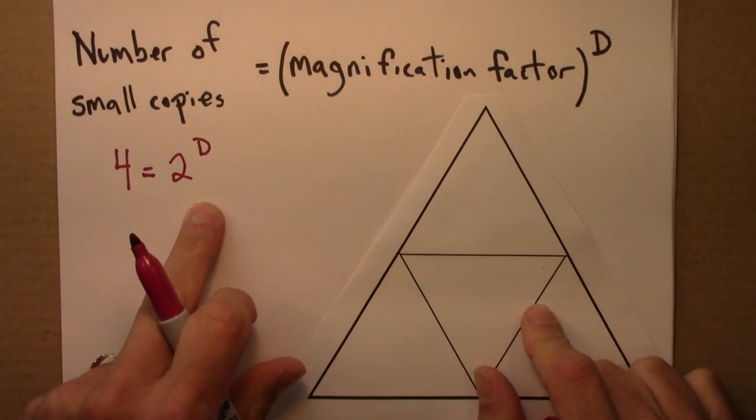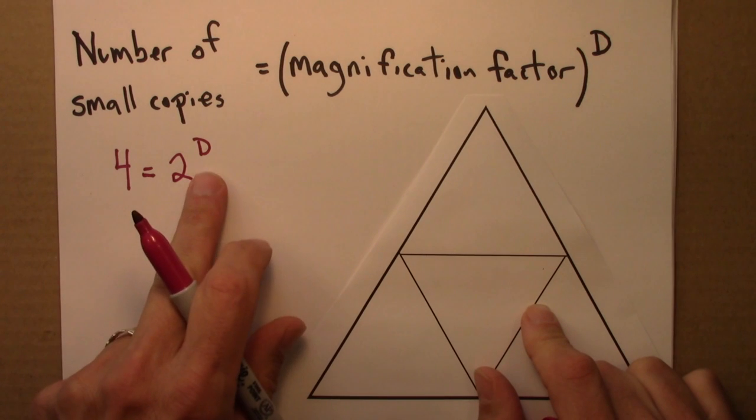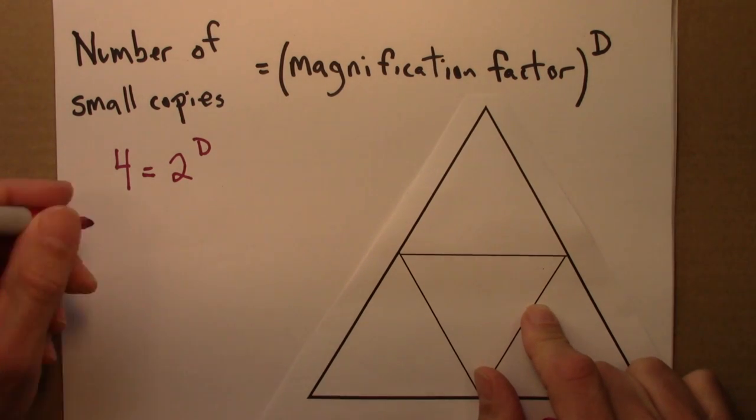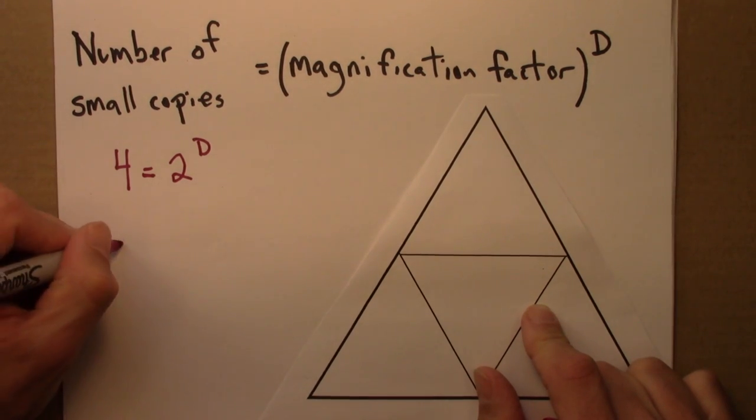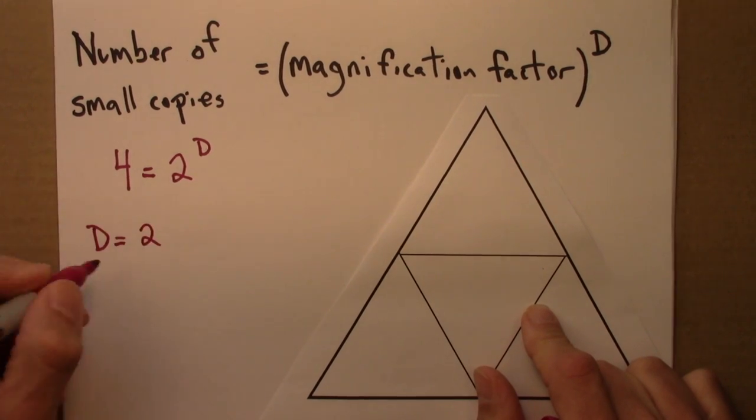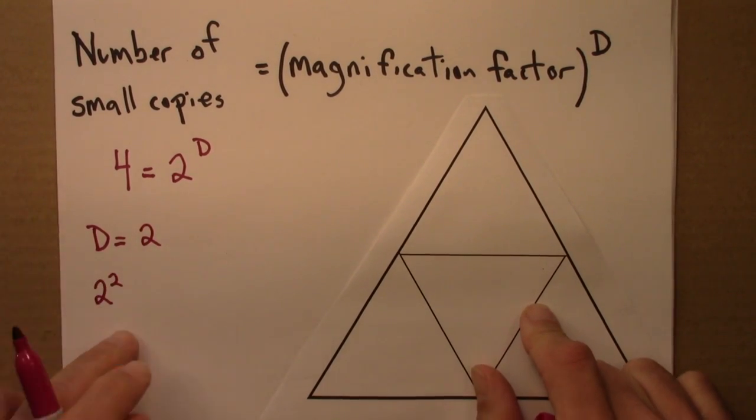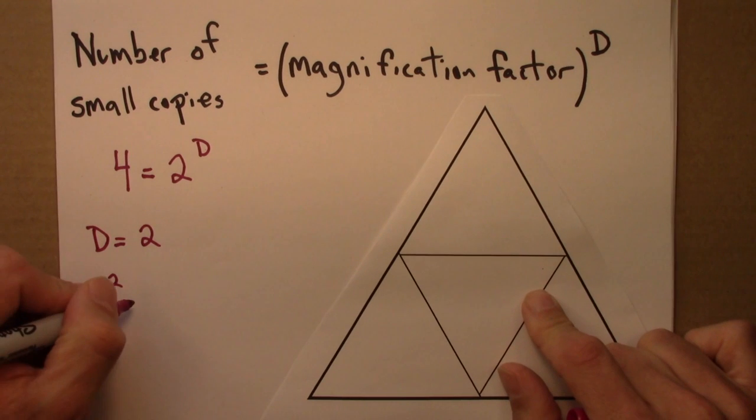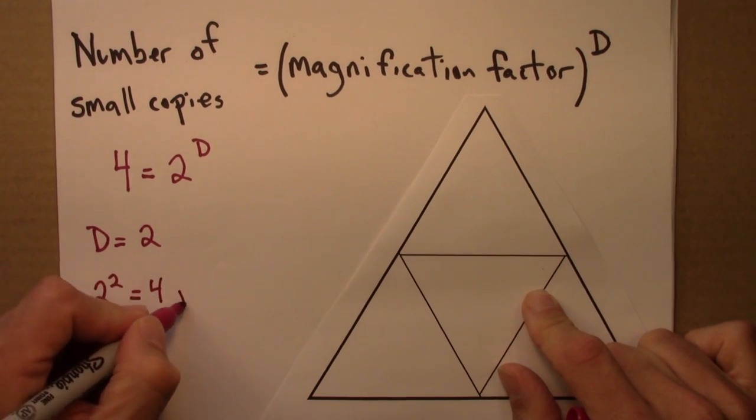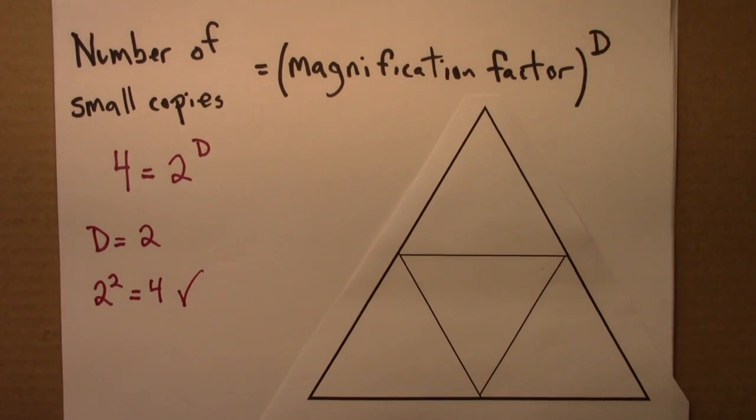So this is our equation. And then we want to figure out the dimension d, and we can see that d is two. Why? Because two to the two, if I plug in d equals two, gives me four.